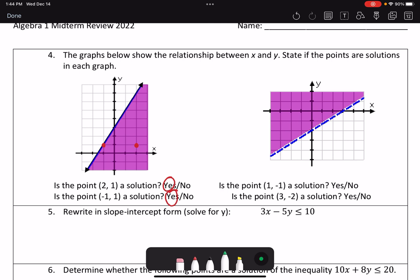For the second one, I've got the point (1, -1). So to the right 1, down 1. Is that a solution? Well, it actually falls on the dashed line, so it is not a solution. Then I have the point (3, -2). That falls not in the shaded region, so it is not a solution as well.